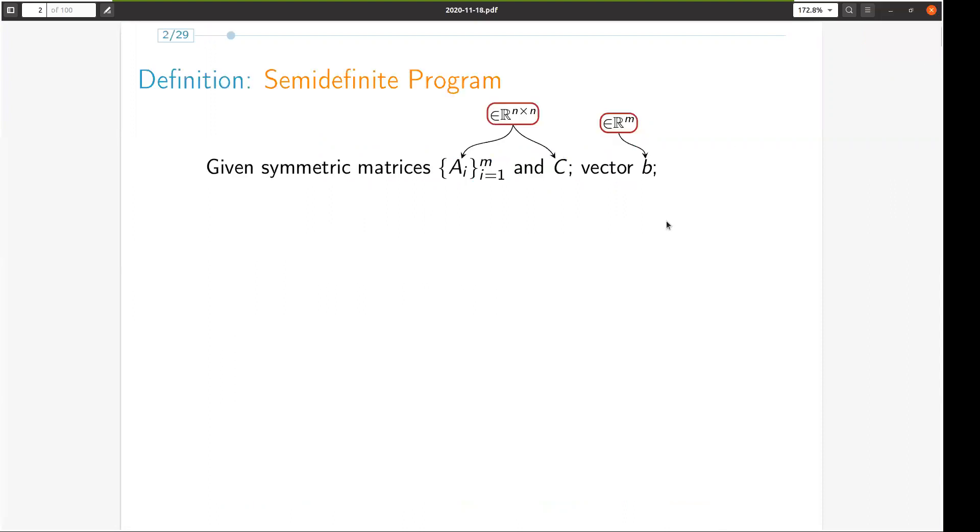Our setup is as follows. We are given an n-by-n cost matrix C and constrained matrices A1 through AM and an m-dimensional vector B. We want to find a positive semidefinite matrix X for which the trace of AI times X equals BI for all m constraints and the trace of C times X is maximized.